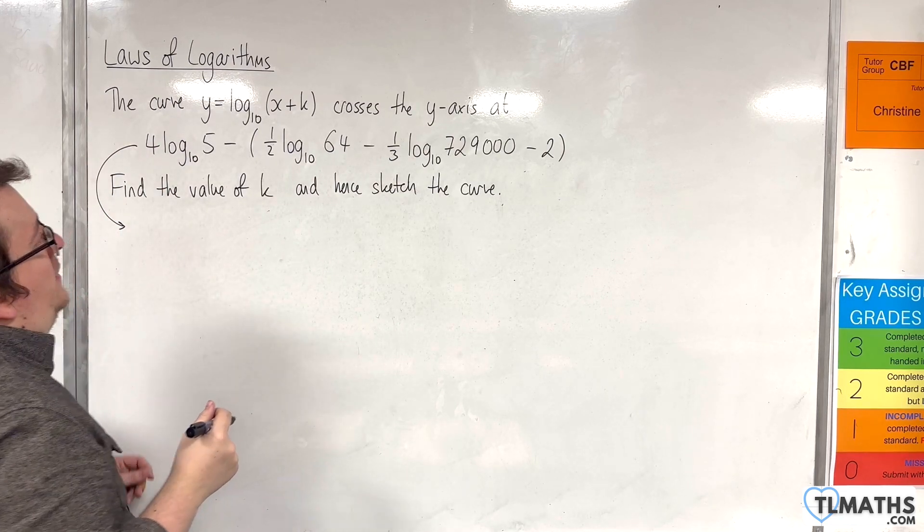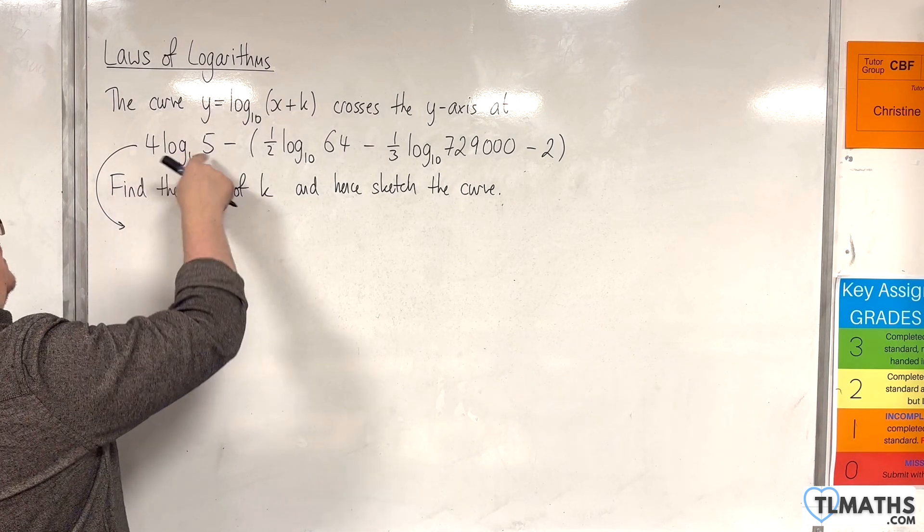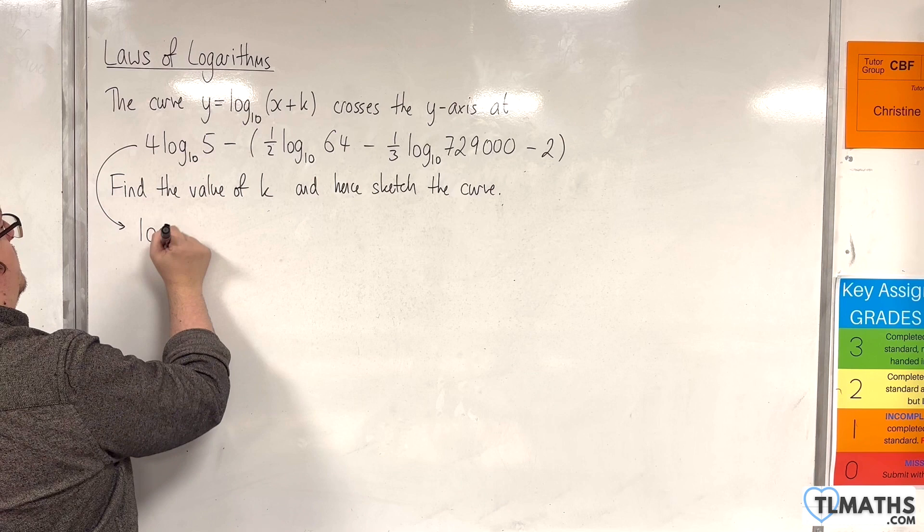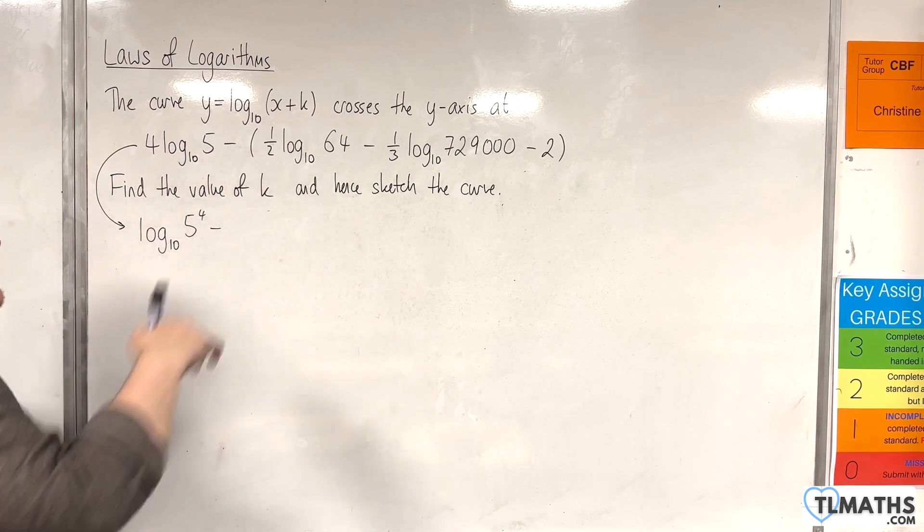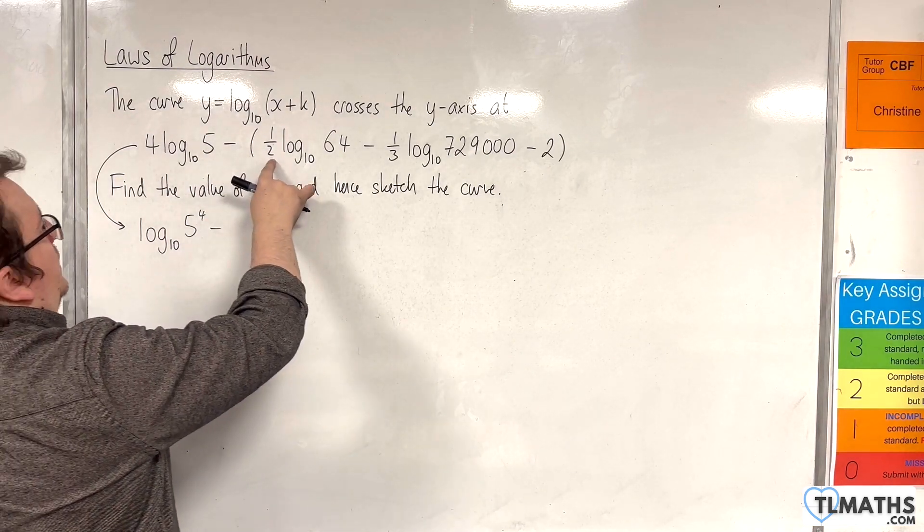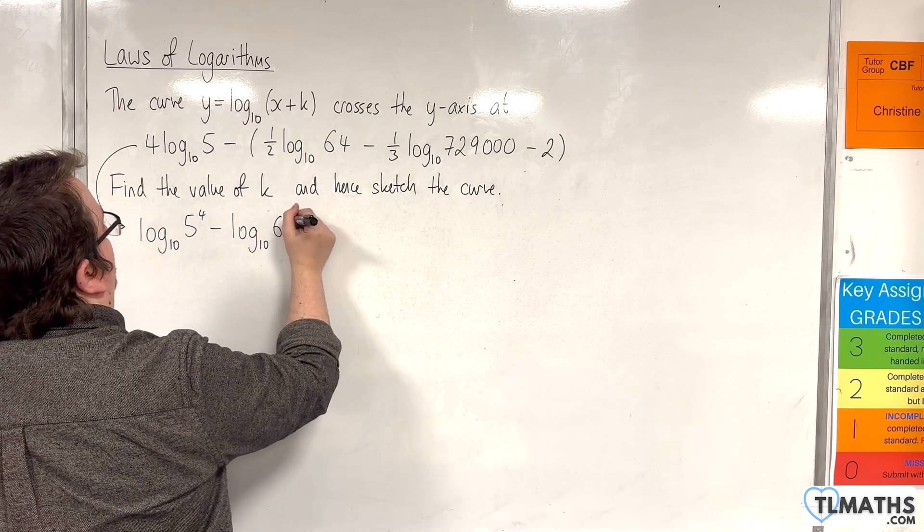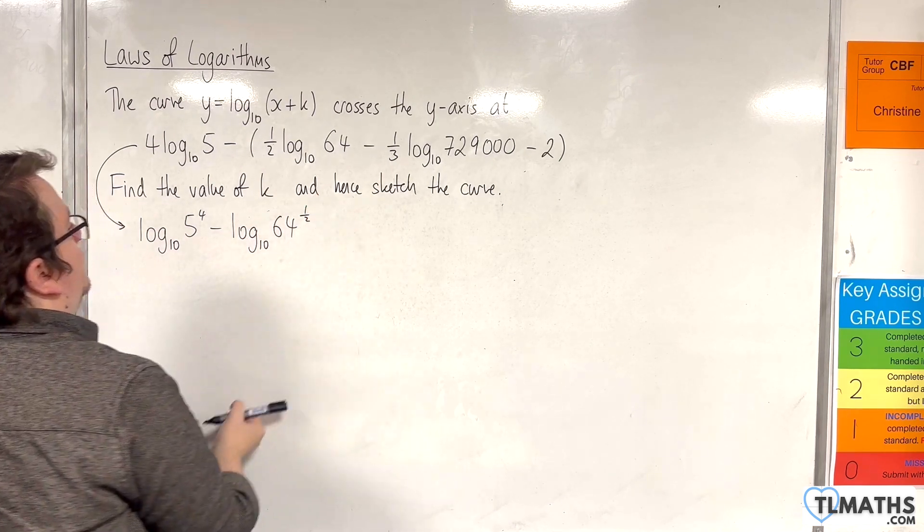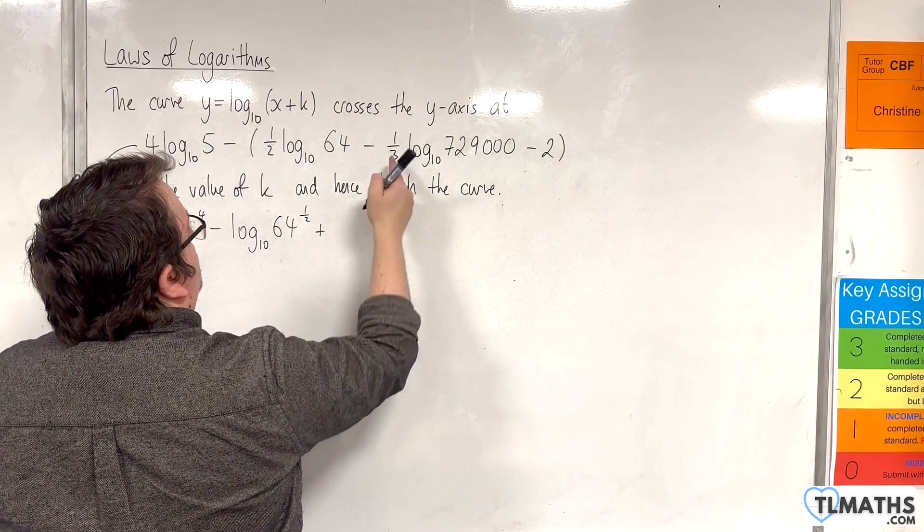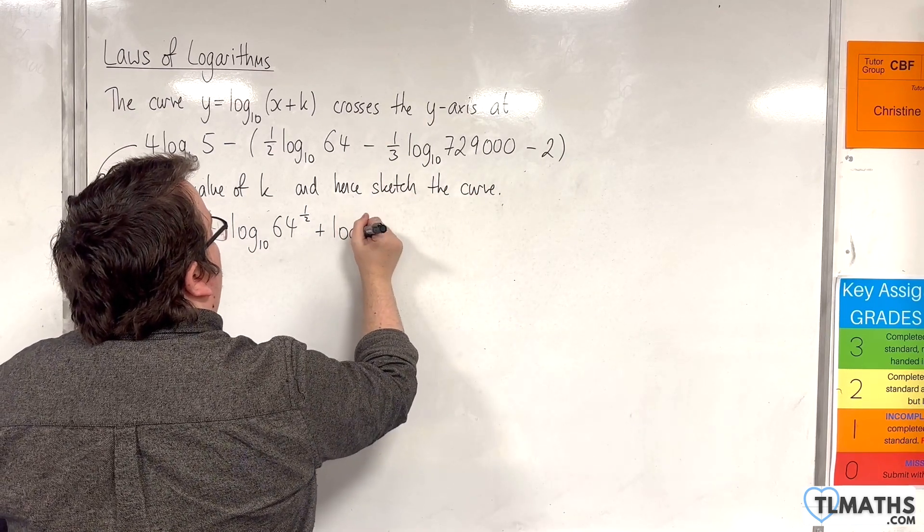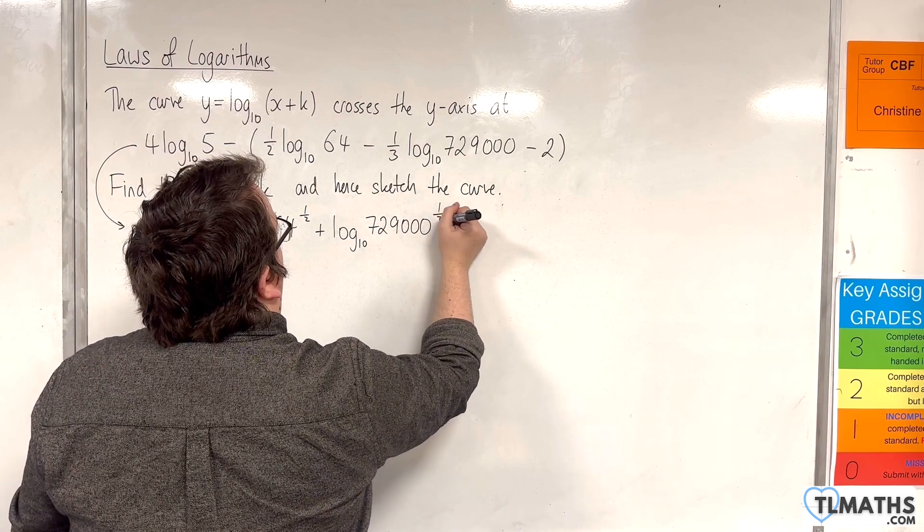So first of all let's deal with the numbers in front of the logarithms. So the 4 can come up to the power here and I can write that as log base 10 of 5 to the 4. Now I'm also going to expand that bracket out. So take away and bring that half up to the power of the 64, so log base 10 of 64 to the half. Take away minus, so plus, bring the third up to the power, so log base 10 of 729,000 to the 1 third.